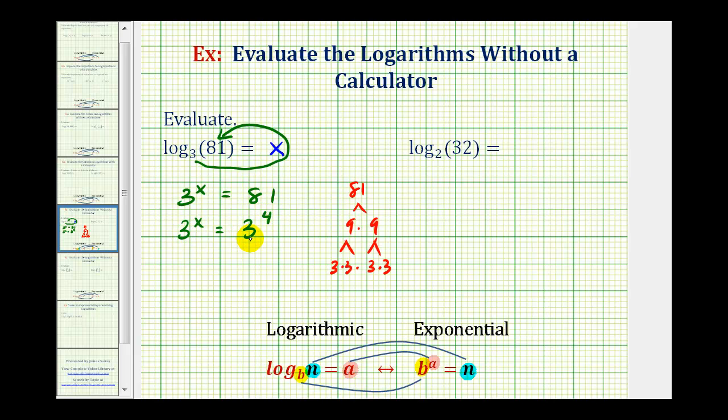So these two are equal and the bases are the same, and therefore the exponents must be equal. Meaning x must equal 4. Well if x equals 4, then log base 3 of 81 must equal 4.